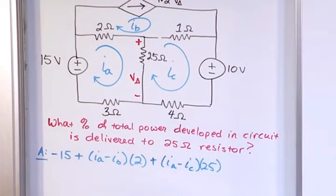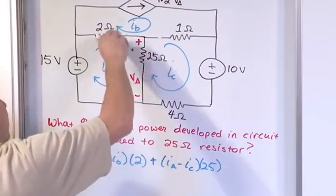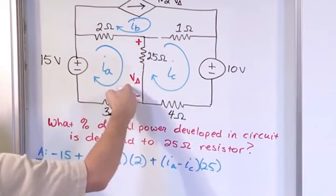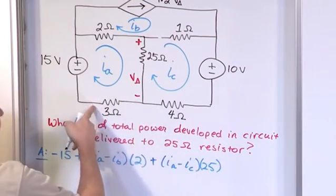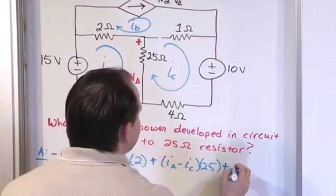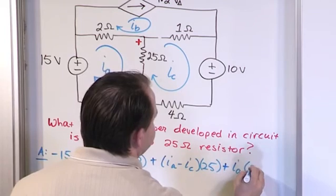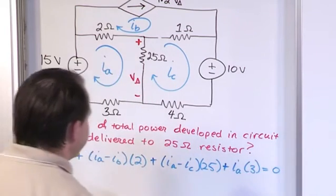That's the voltage drop right there. And then finally, we're going to make our way down to the 3 ohm resistor. The current, Ia, is the only current flowing through in this direction. There's an implied voltage drop there. So it'll be Ia times 3. And that's equal to 0.